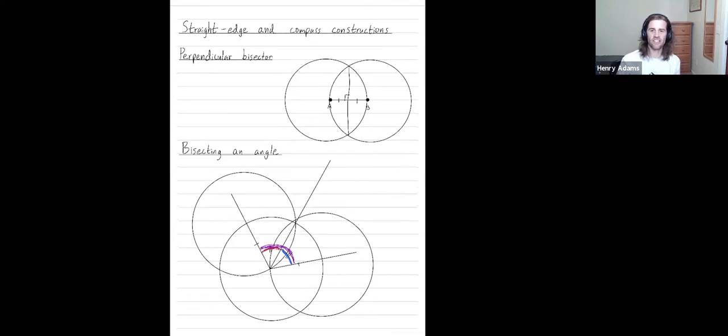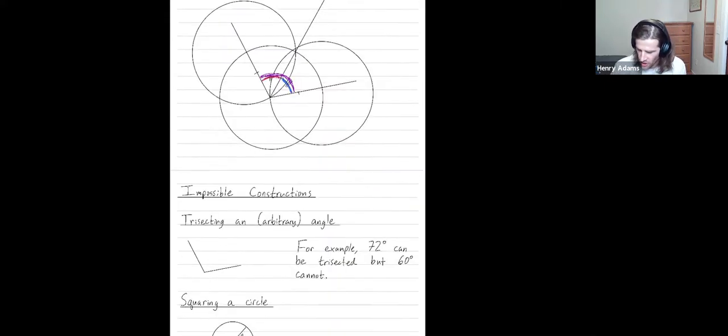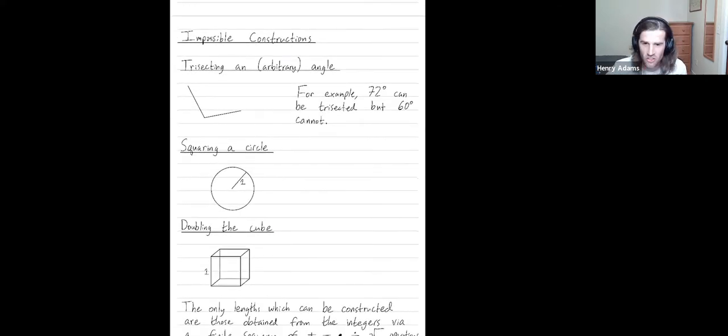You knew that you could construct many things with a straight edge and compass. You could take perpendicular bisectors of edges, you could bisect an angle, you could even construct square roots. If I want to take the square root of some number, I draw that side length on both sides.